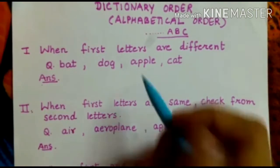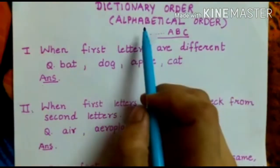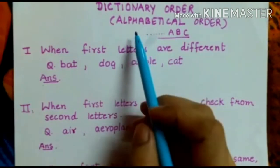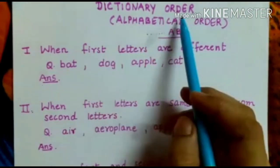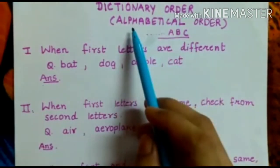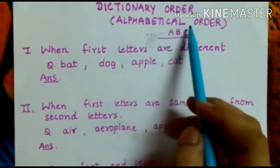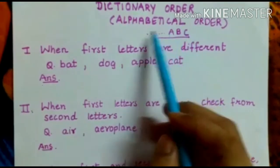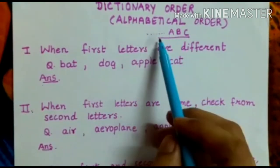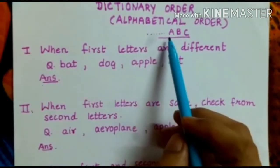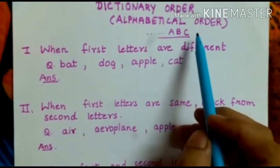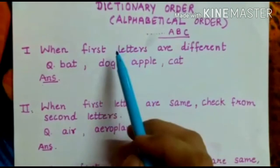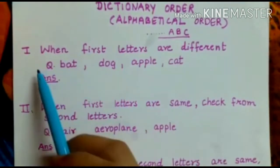Good morning students. Today I am here to teach you dictionary order, which is also called alphabetical order. It means we have to arrange the words in order of A, B, C, and so on. Let us understand with the following examples.